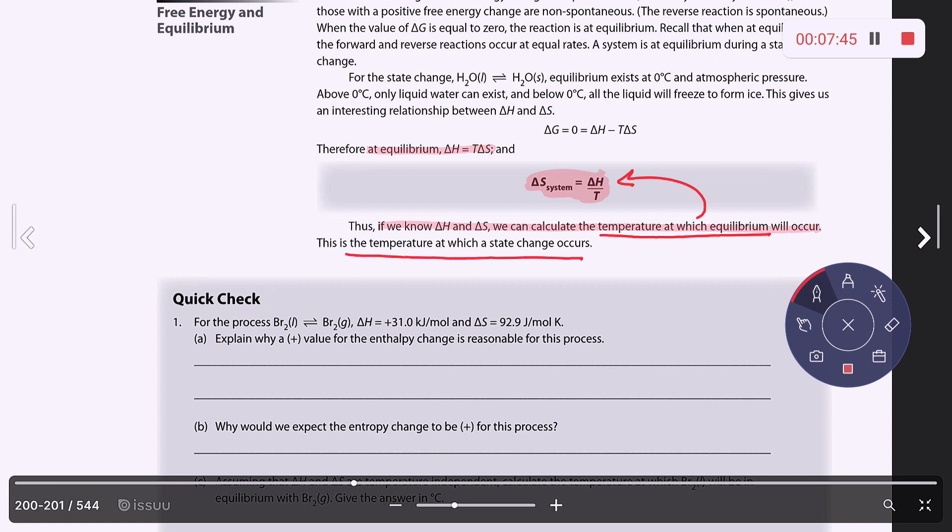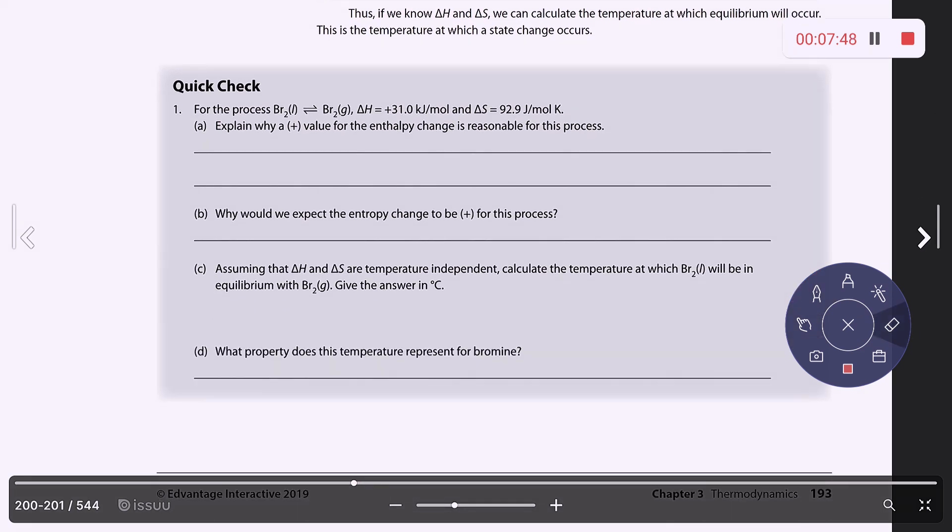Now let's take a look at the quick check. Number one, we have a certain process with the delta H and delta S values. Explain why a positive value for the enthalpy change is reasonable for this process. Well, here we're converting liquid into gas. So this is vaporization. So vaporizing requires heat energy. So that means this would be absorbing heat. It would be endothermic. And that's why we would have a positive delta H.